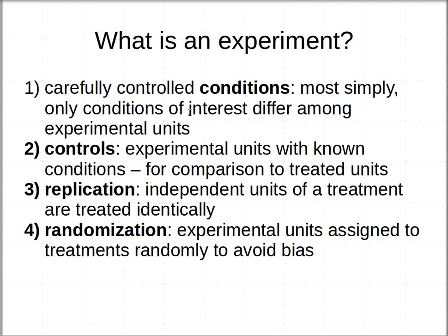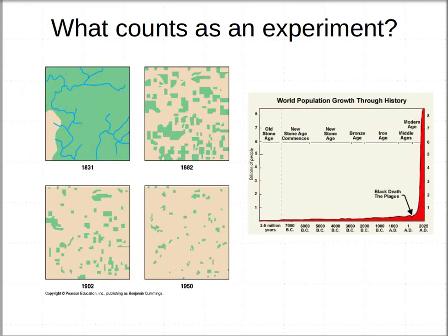So those four major features — carefully controlled conditions, having experimental controls for comparison to your treatments, replication with multiple units assigned at random to treatments, and randomization — are the four main features of what makes an experiment. You could argue that in the absence of any of those four conditions, you haven't actually conducted a good experiment. You might claim it's an experiment, but some people would say, no, that's not an experiment. We use the word experiment quite often.